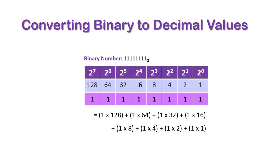All our values are active this time, so we have 1 times 128 plus 1 times 64 plus 1 times 32 plus 1 times 16 plus 1 times 8 plus 1 times 4 plus 1 times 2 plus 1 times 1. This ends up equaling 128 plus 64 plus 32 plus 16 plus 8 plus 4 plus 2 plus 1, which gives us 255.